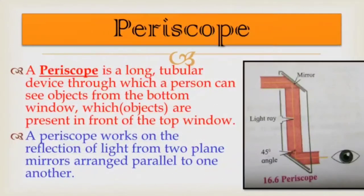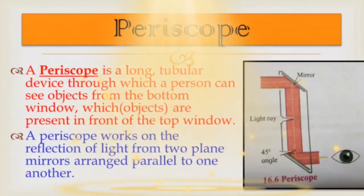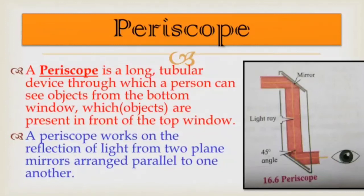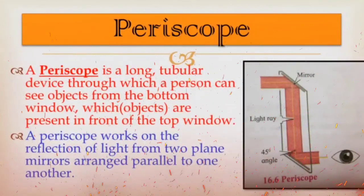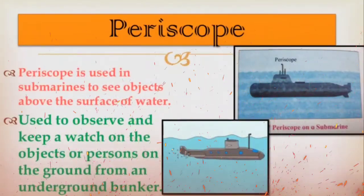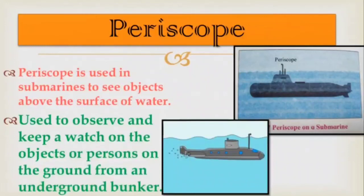Let us see the periscope. Take a cardboard box, make slits in the top and bottom sides of the box, and place two mirrors so that they make an angle of 45 degrees with the sides of the box and are parallel to each other. Fix them with sticking tape. Make two windows of one inch near the two mirrors. Now see through the bottom window and note what you see. From the bottom window, one can see what is in front of the top window. This device is called a periscope. It is used in submarines to see objects above the surface of water. It is also used to observe and keep watch on objects or persons on the ground from underground bunkers.